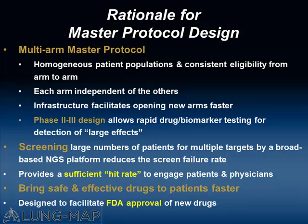More than 50% of patients will have a specific biomarker that allows them to go on to one of four arms. For those that don't have a specific biomarker, they're going to get immunotherapy. For those who were at the lung session, you see how important immunotherapy is as a target — PD-1, PD-L1 checkpoint inhibition. We want to bring drugs to patients and hopefully get them approved.